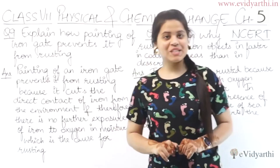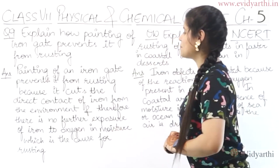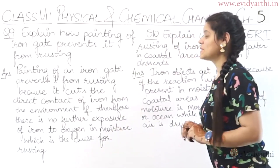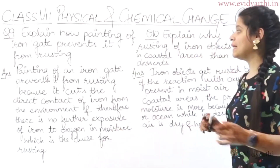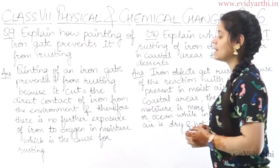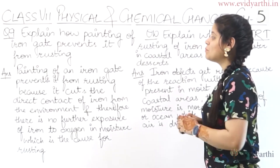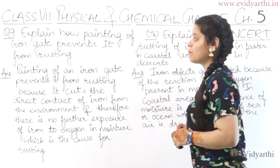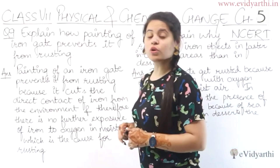Now coming to the next question. Question number 9 says: explain how painting of an iron gate prevents it from rusting.